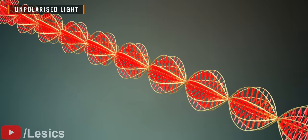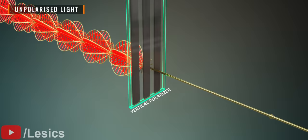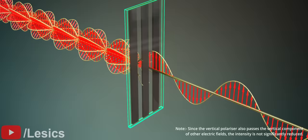When we pass this light through the vertically polarized sheet, the polarizer allows only the vertical components of the electrical fields, and blocks all others.